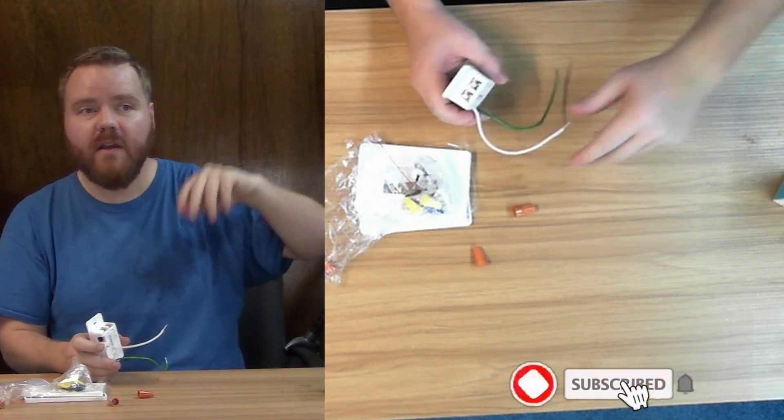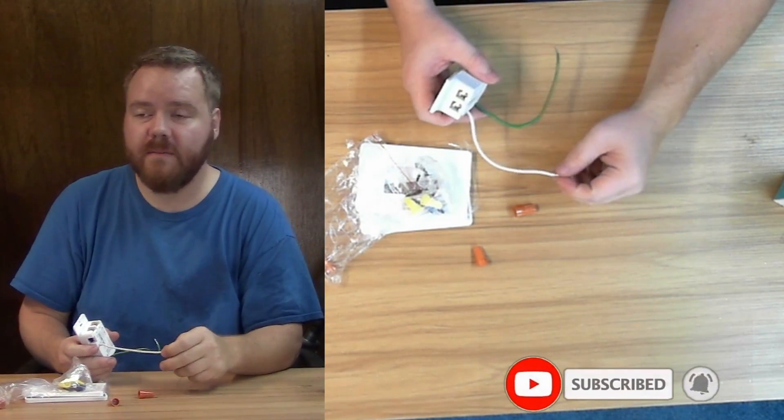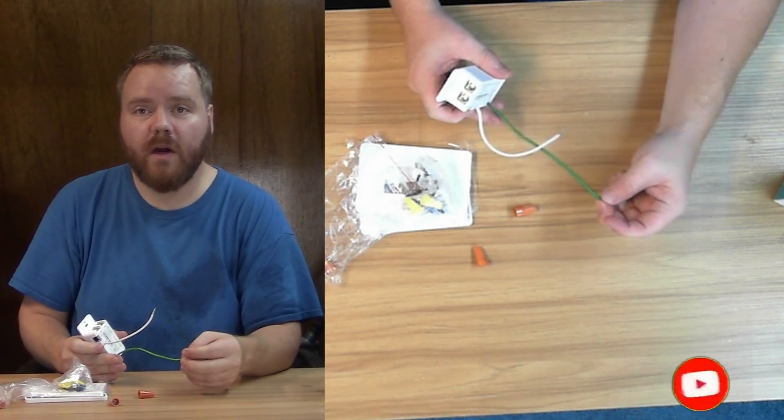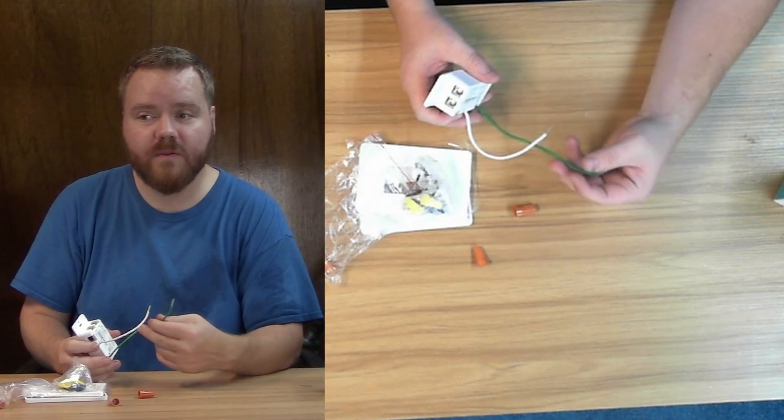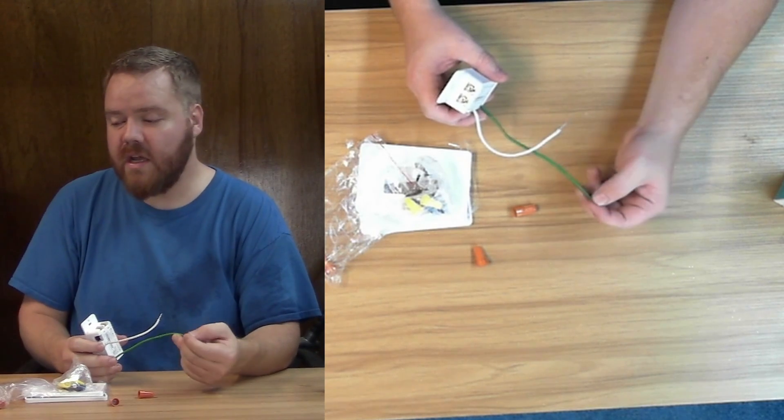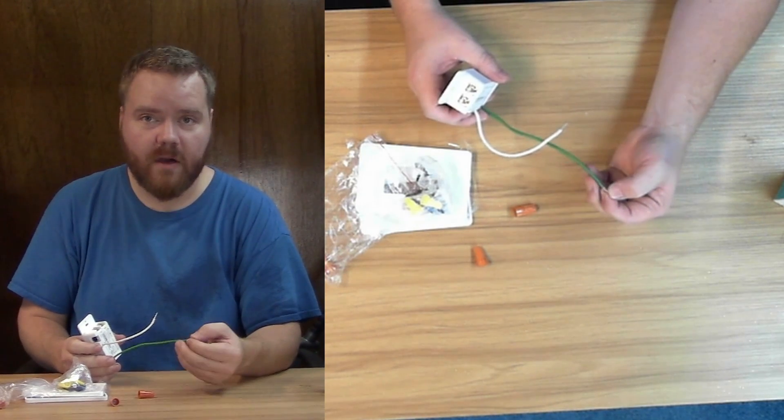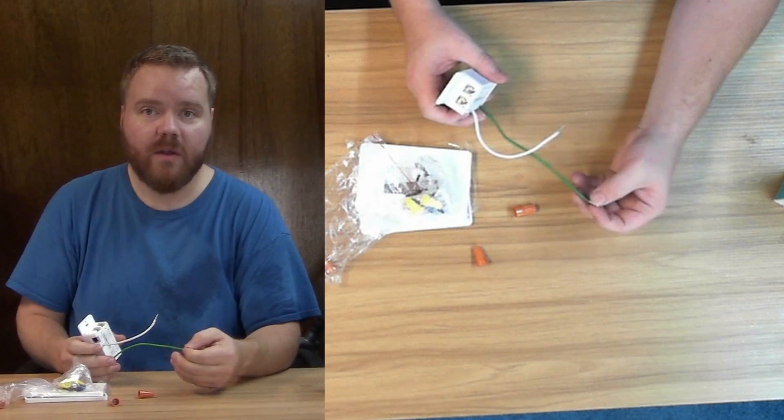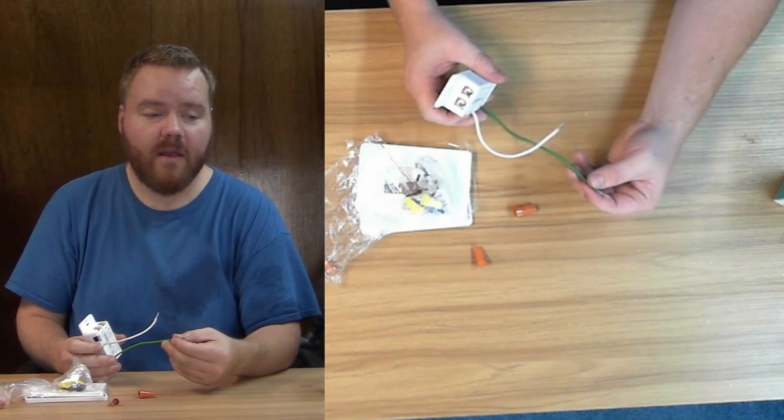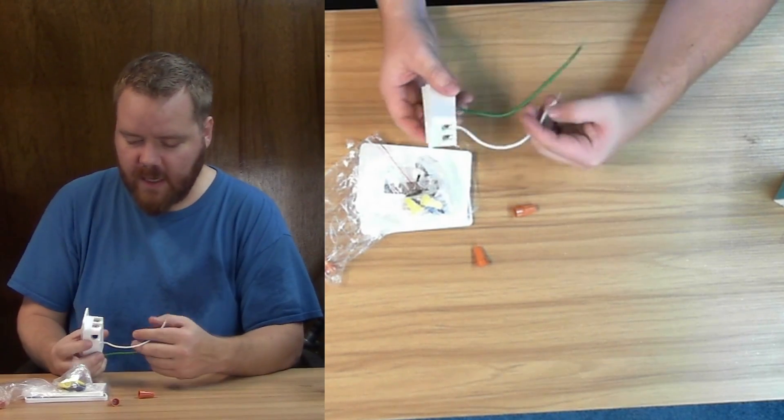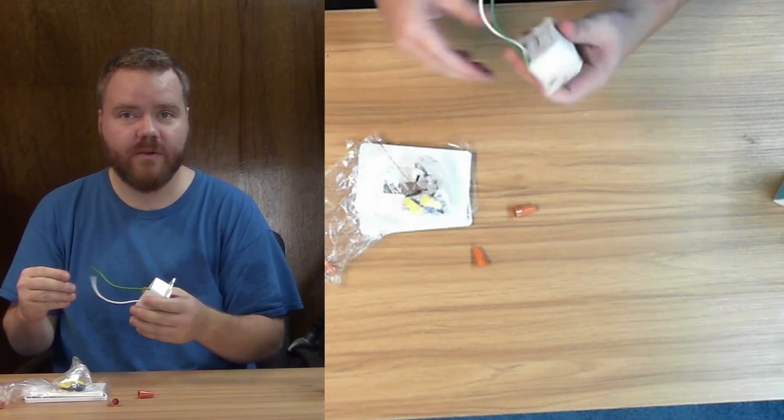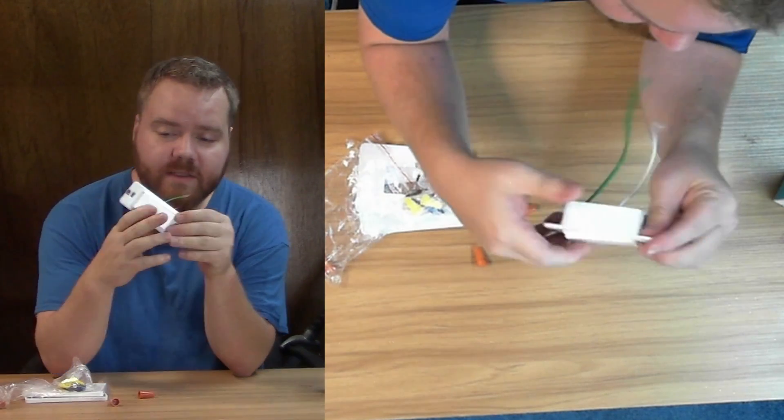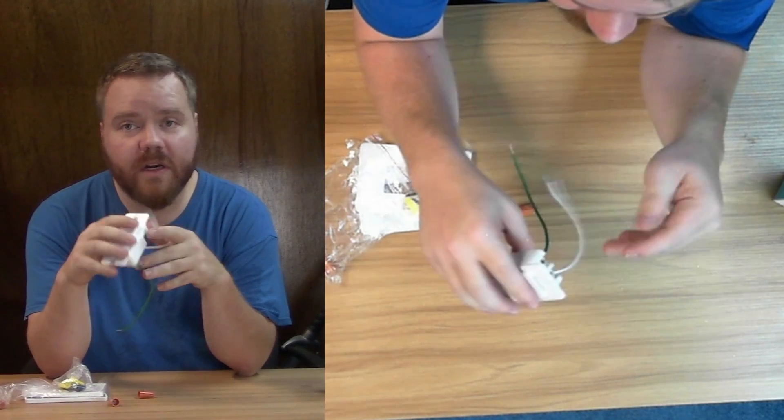When I originally went to hook this up, it was a white cable and it threw me off because I thought it was a neutral wire. I went through all these things where it was all flickering, and sometimes the switch would work and sometimes it wouldn't. It would work on the dumb switch but not on the smart switch, but if I had the dumb switch off it would work on the smart switch. It was just a nightmare and I hated it. It wasted my entire Saturday and I was very upset.